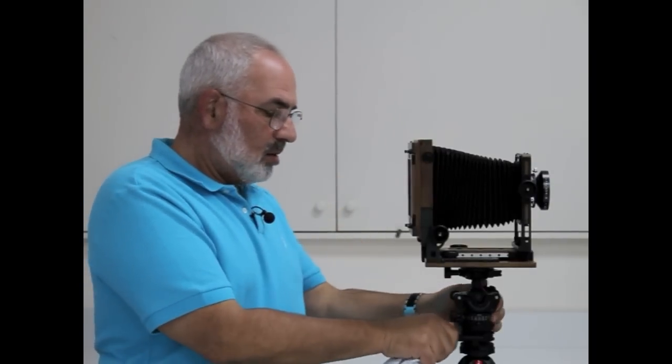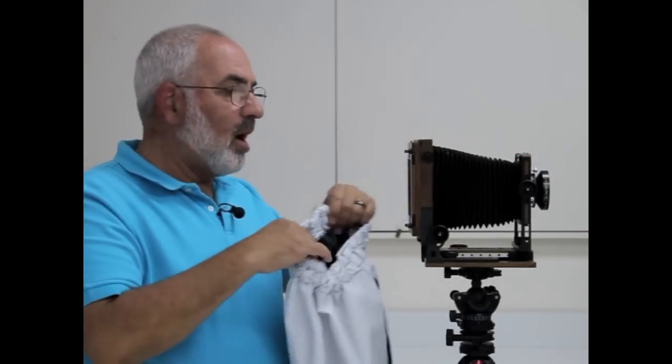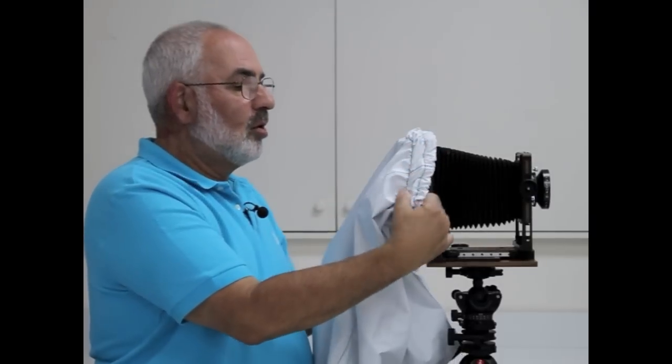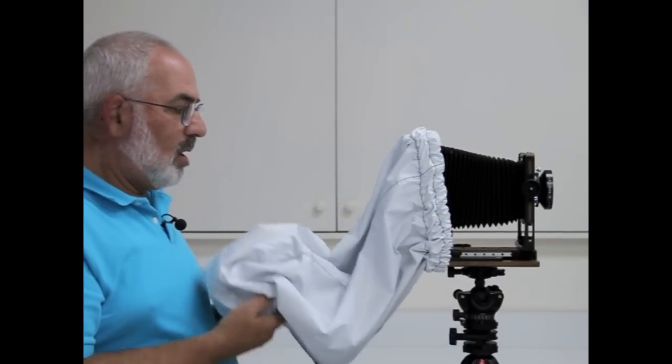So basically, make sure everything's locked down. Keep the Velcro on the bottom. Just put this on the top. Loop it around to the bottom. And then your head goes right in here.